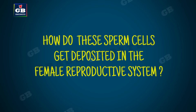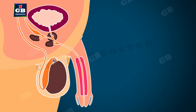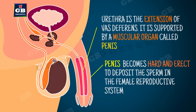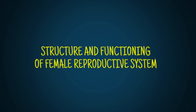How are sperms deposited in the female reproductive system? The sperms from the vas deferens enter another duct called the urethra, which is surrounded and supported by a muscular organ called the penis. The penis is the organ that deposits the sperms in the female reproductive system; it becomes hard and erect during the time of mating.